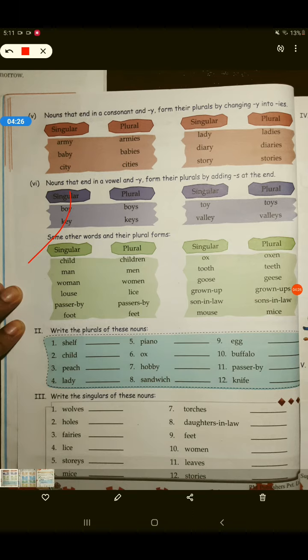Some other words and their plural forms. Child, children. Man, men. यहाँ पर, the vowel is changing. A has become E. Woman, women. Loaf, loaves. Passer by, passers by. इसमें आपको ये ध्यान रखना है कि root word कौन सा है? जो ऐसे compound words होते हैं, इसमें आपको ध्यान रखना है कि root word कौन सा है? उसी का plural करेंगे आप.